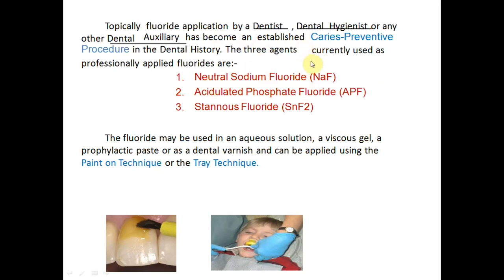Saliva also contains fluoride. The three basic solutions commonly used in topical fluorides are: neutral sodium fluoride, acidulated phosphate fluoride (APF), and stannous fluoride. These can be applied either by the paint-on technique — painting the surface with a brush — or by the tray technique, where the material is loaded into a tray and applied. Aqueous solutions use paint-on, while viscous gels use the tray method.